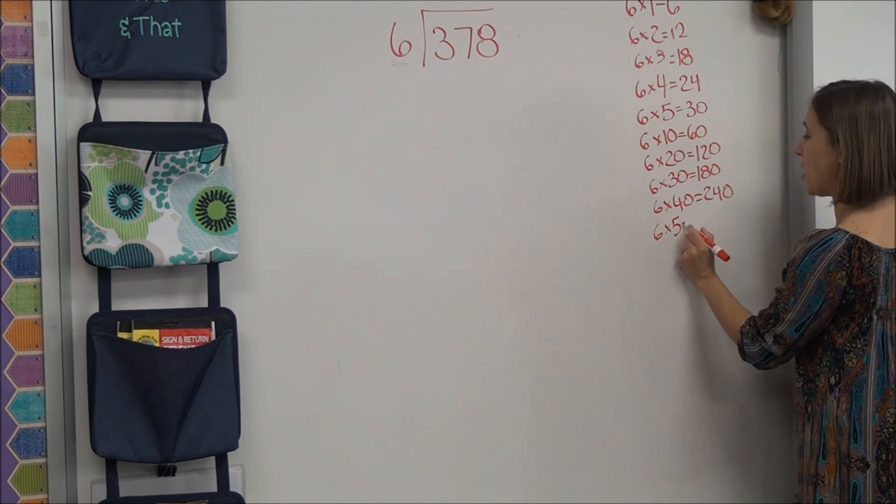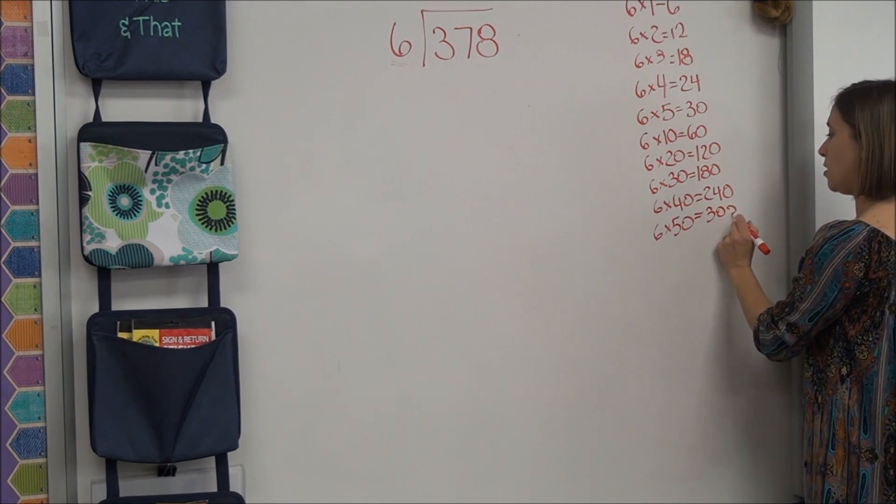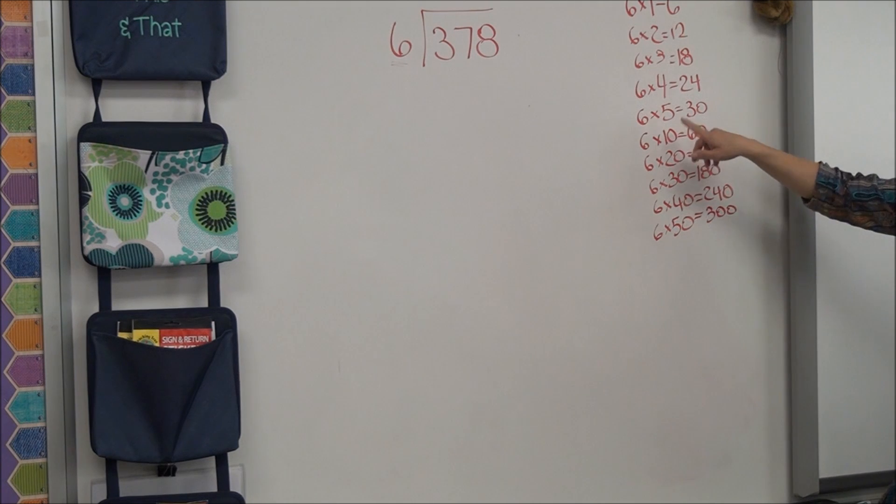And if I know 6 times 5, it helps me figure out 6 times 50. 300. Nice. You know what? You want to do one more fact? What is 6 times 6? 36. 36.